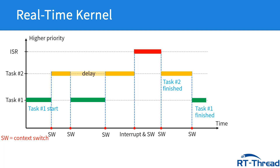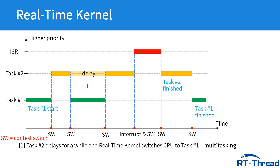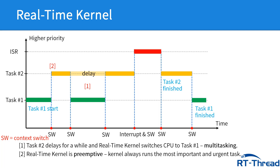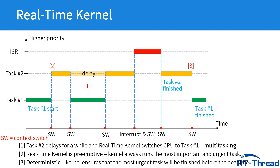Compared to the foreground-background system, there are three aspects of improvement. Number one: multitasking — when task 2 delays, the real-time kernel switches the CPU to task 1. Multitasking is the process of scheduling and switching the CPU between several tasks, providing the illusion of multiple CPUs and maximizing CPU use. Number two: the real-time kernel is preemptive, meaning it always runs the most important and urgent task. Number three: deterministic — the kernel ensures that the most urgent task will be finished before the deadline.